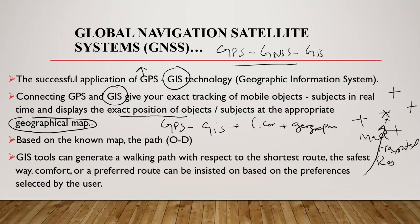Both GPS and GIS work on the UDI metrics — from origin to destination. Through GIS, we can generate different types of shortest routes, identify areas with less traffic, find safer ways, increase comfort, and also accommodate the preferences of different users.